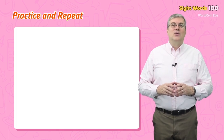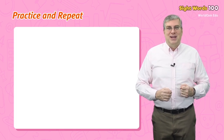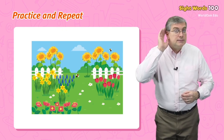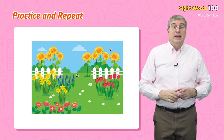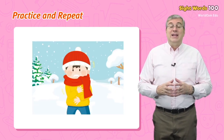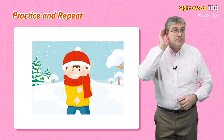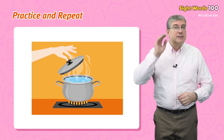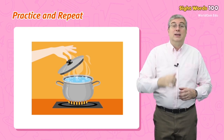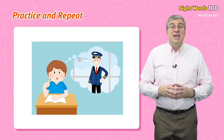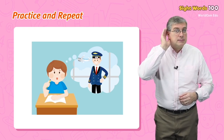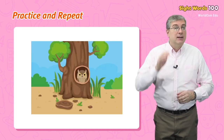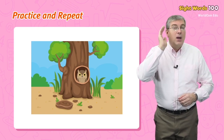Now it's time for practice and repeat. Repeat after me: flowers — many flowers are in the garden. Weather — the weather is very cold. Hot — the water is very hot. Wish — I wish to be a pilot. Hole — a hole is in the tree. Very good everybody!